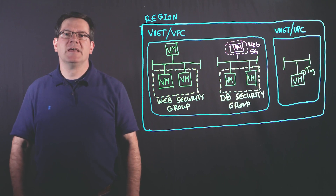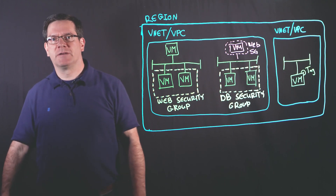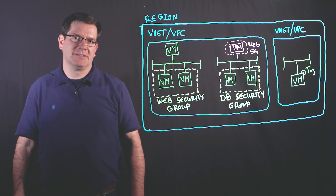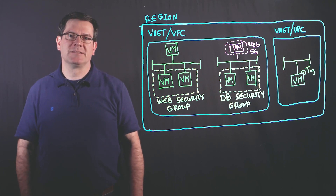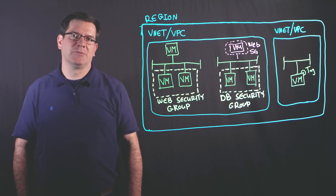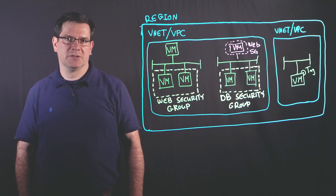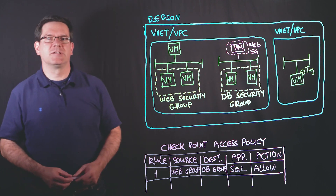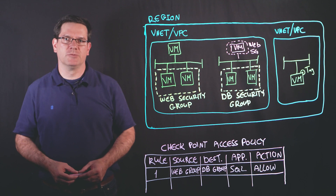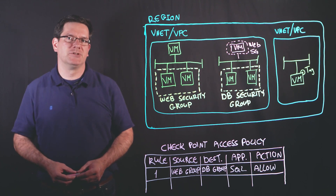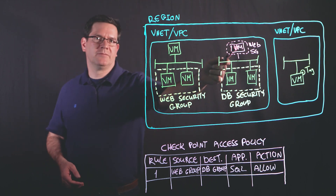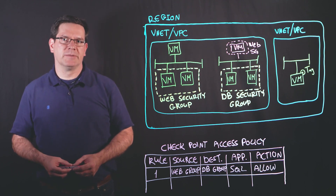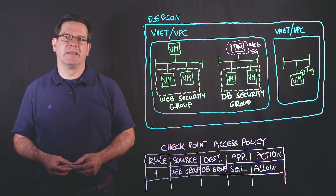In a traditional security policy, every time we add a new resource, an administrator needs to modify the firewall policy, add the new object, and attach it to a rule or group of objects. We want a dynamic policy that enables making changes to the environment and still follow security rules. That's exactly what the controller enables. Web group and DB group, in this case, are security groups learned from our public cloud environment. Any machine part of the web group is allowed to access database applications on machines in the DB group. So this newly created VM can access machines that are part of the DB security group because the controller will have polled the public cloud environment and learned the existence of this new VM and that it is part of the web group.